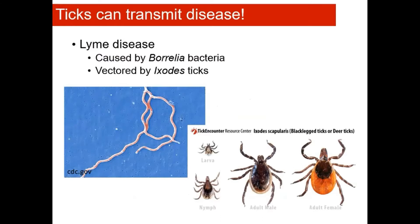Ticks can transmit pathogens that cause disease. They can transmit viruses, bacteria, and parasites, all of which can cause disease in humans. One tick-borne disease that is particularly problematic in North America is Lyme disease. You may have heard of it as it's becoming more and more common in Ohio and across the country. Lyme is caused by bacteria in the genus Borrelia, and it's transmitted by ticks in the genus Ixodes.